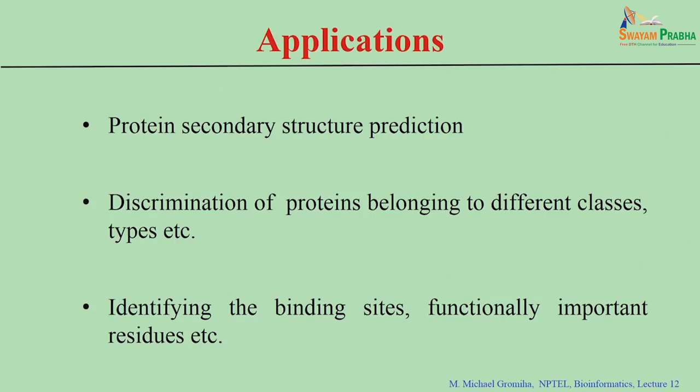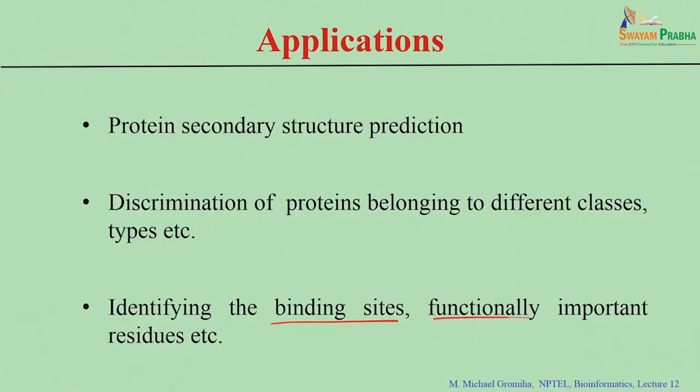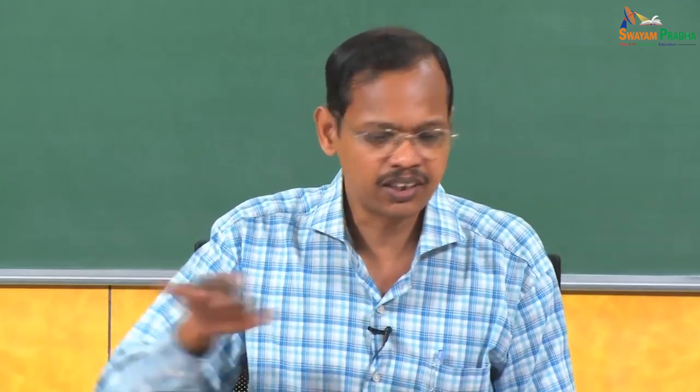We discussed position specific scoring matrices and weight matrices, which have several potential applications. Major applications include predicting secondary structures — such as alpha helices, beta strands, and coils — discriminating proteins from different classes and functions, and identifying binding sites or functionally important residues. These PSSM-based features are used in various bioinformatics prediction methods and can be related to experimental data.